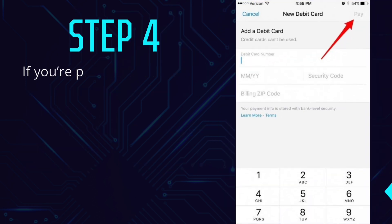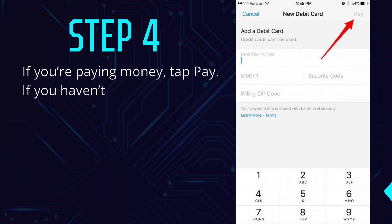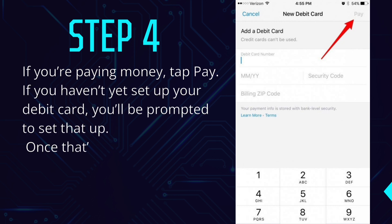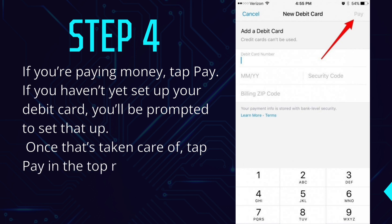Step 4: If you're paying money, tap Pay. If you haven't yet set up your debit card, you'll be prompted to set that up. Once that's taken care of, tap Pay in the top right corner. Confirm Pay.